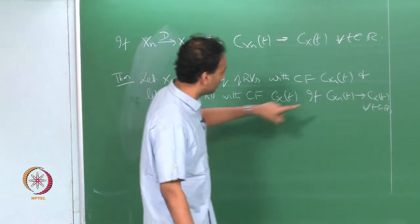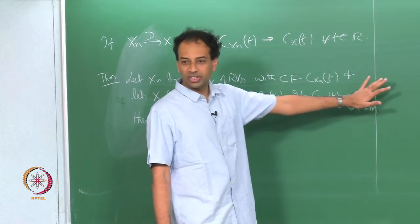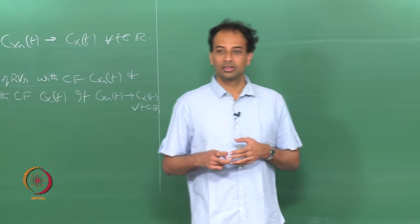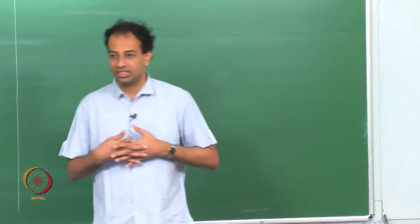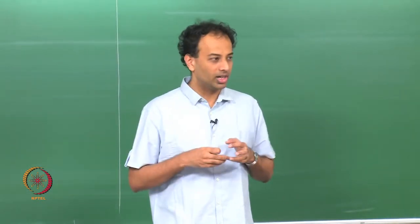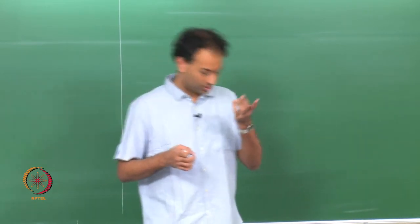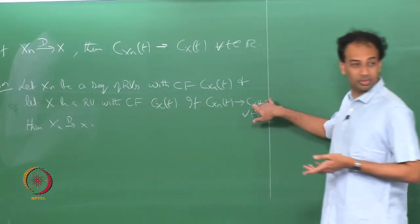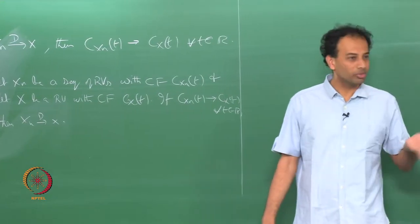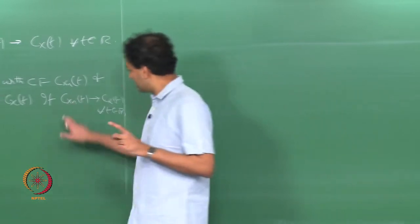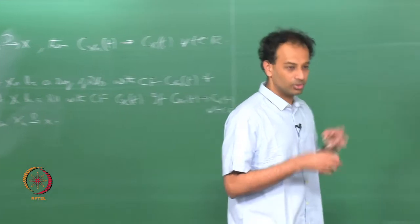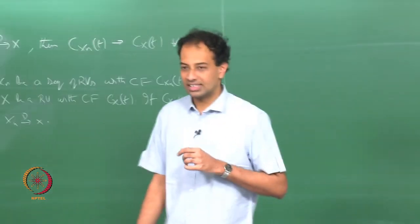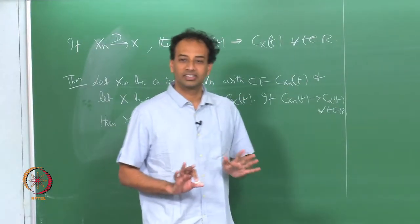The catch is that the sequence of characteristic functions may converge to some function of t which is not a valid characteristic function. A characteristic function must satisfy three defining properties: absolute value equals 1 at 0, uniform continuity, and being a non-negative definite kernel. If the limit function fails even one of these, it is not a valid characteristic function and there is no convergence in distribution. If the limit does satisfy all three, you have convergence in distribution.